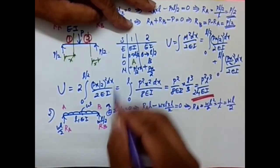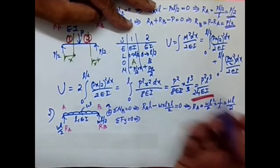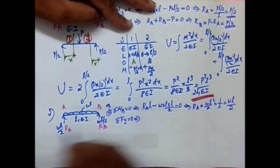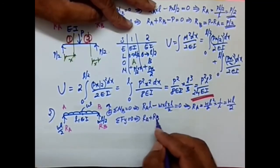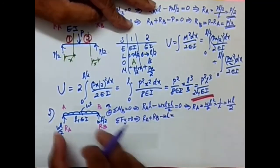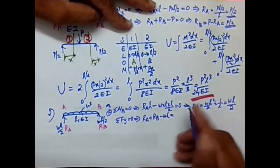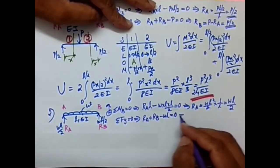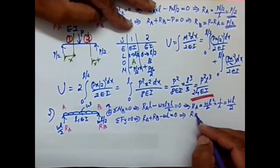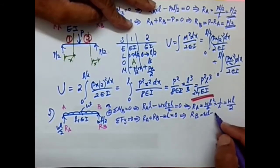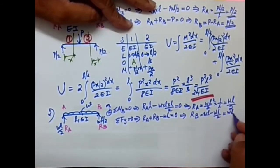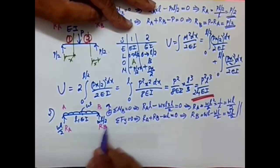Applying Sigma Fy = 0, with upward forces positive: RA + RB − WL = 0. Therefore RB = WL − RA = WL − WL/2 = WL/2. So both reactions are WL/2, and we now have the values of RA and RB.